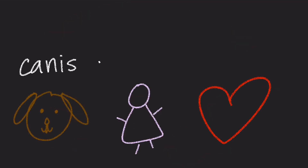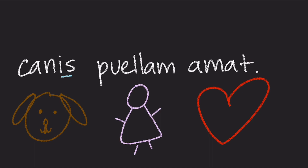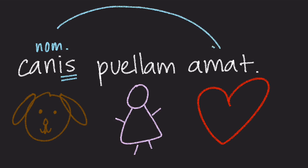What if we try it the other way around? What if we had Kanes, Puella, Amat? In this sentence, Kanes ends in I-S, which means he is the nominative subject of the sentence, doing the action. Puella ends in A-M, which means she is the accusative, receiving the action. So this sentence means: the dog loves the girl.